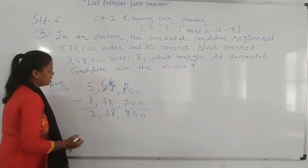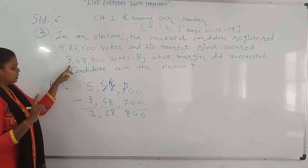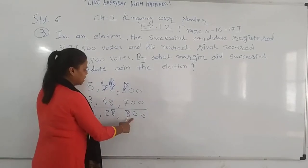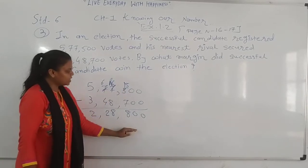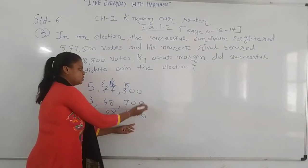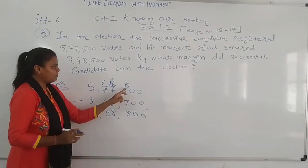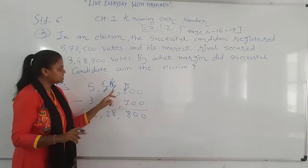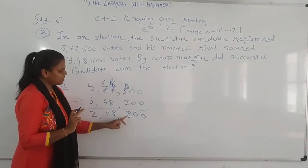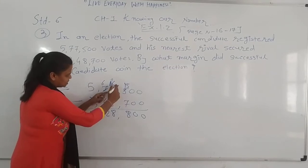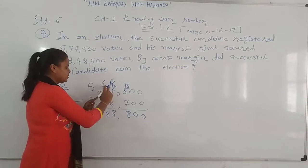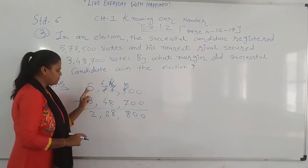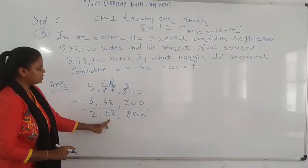So the successful candidate wins by 2,28,800 votes. Let me redo: 5 minus 7 not possible, borrow to get 15 minus 7 is 8. Then 6 minus 8 not possible, borrow to get 16 minus 8 is 8. And 6 minus 4 is 2, 5 minus 3 is 2. So the answer is 2,28,800.